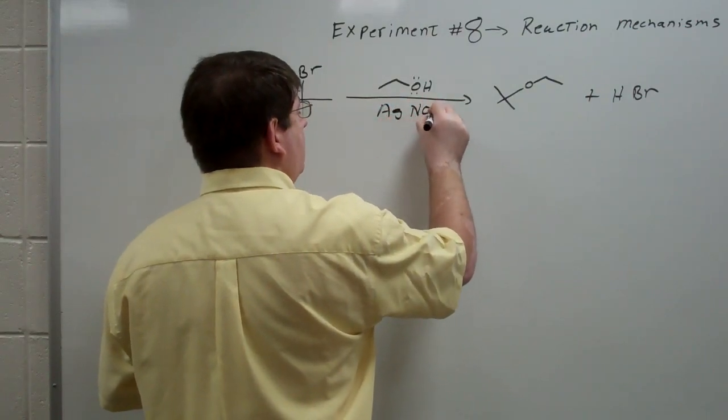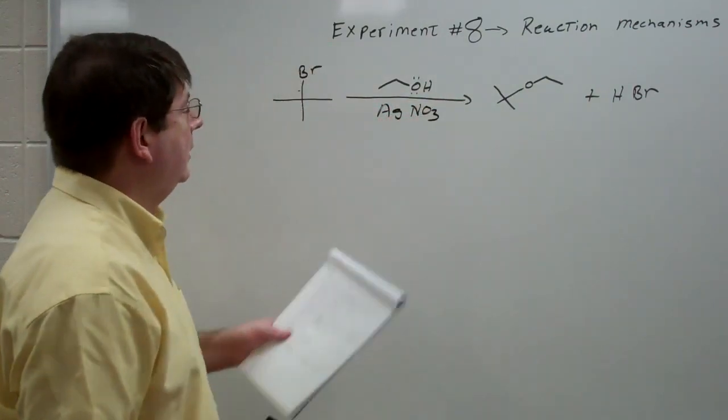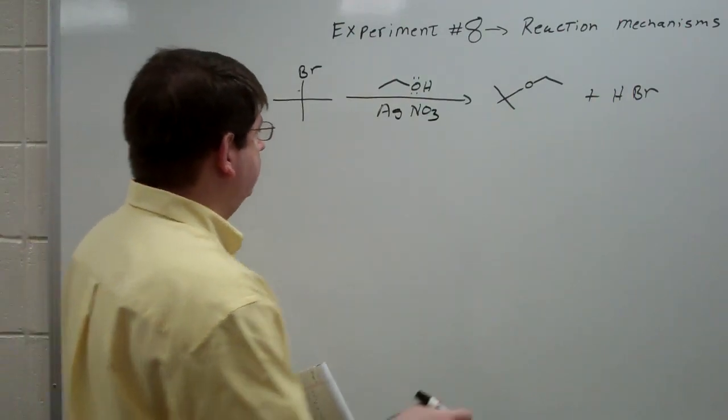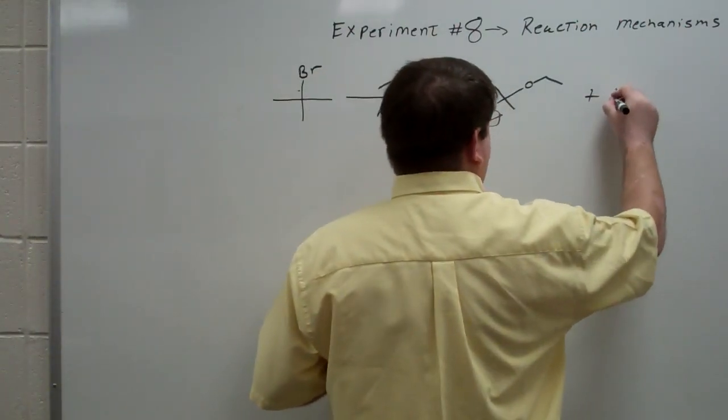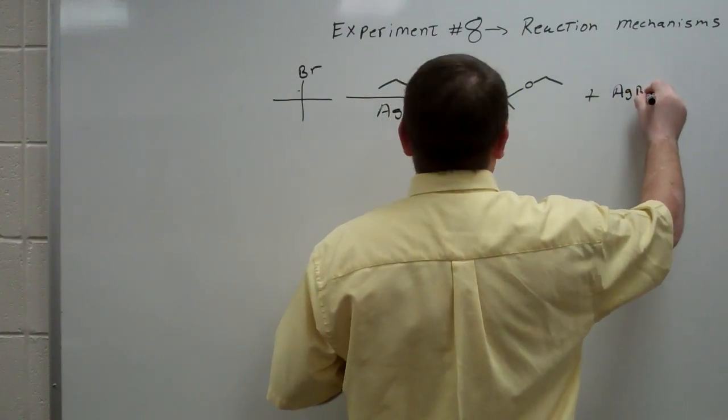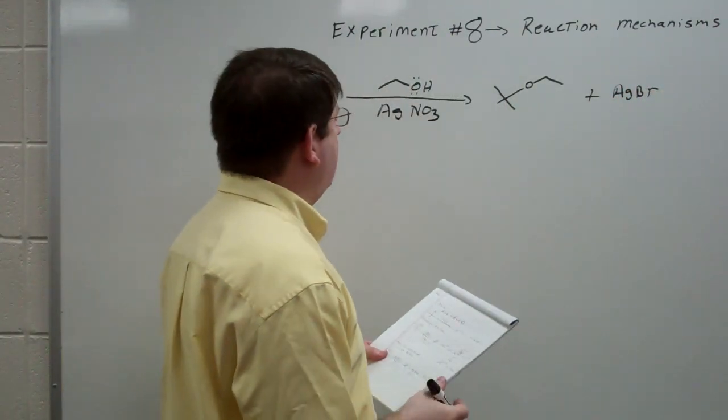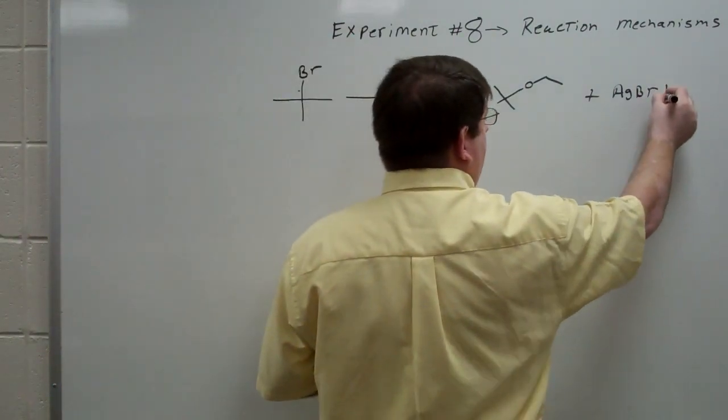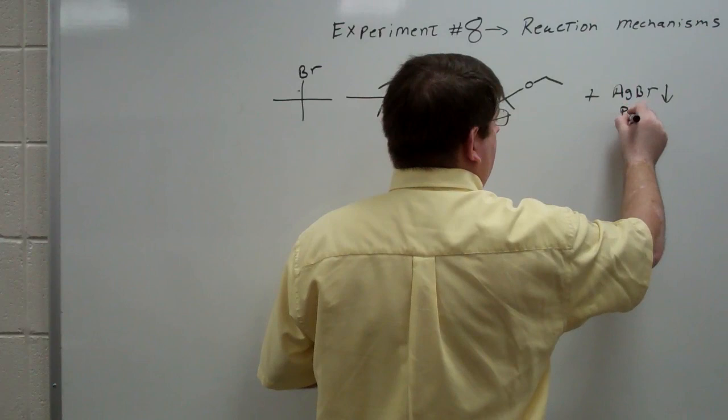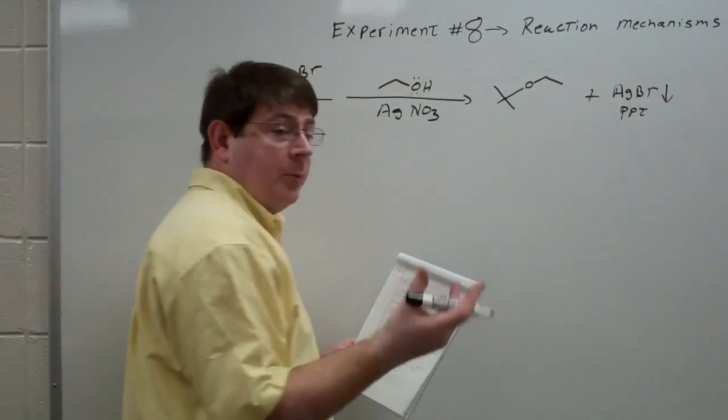And so we're going to use a little different process whereby we're going to use ethanol with silver nitrate dissolved in it. So silver nitrate will dissolve in ethanol. And when the reaction occurs, you get silver bromide as a product. And what happens, the silver bromide will precipitate from the reaction and you'll get a white precipitate, just like you did with the Finkelstein reaction.